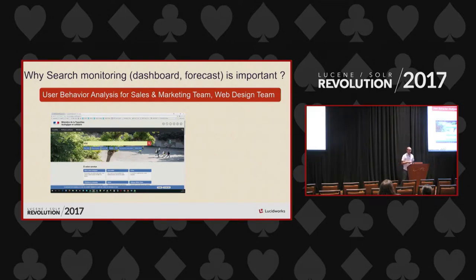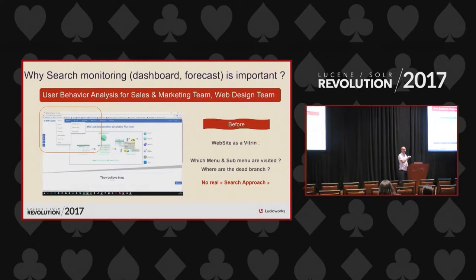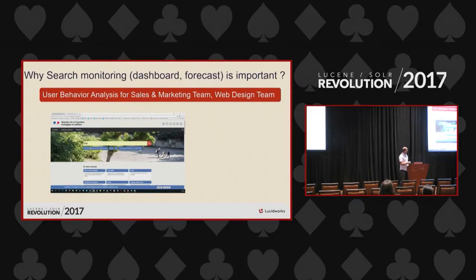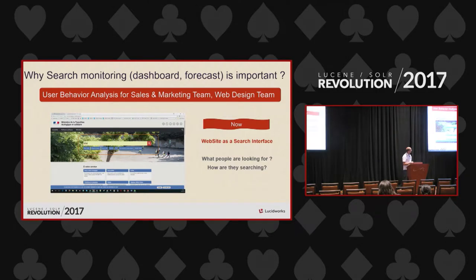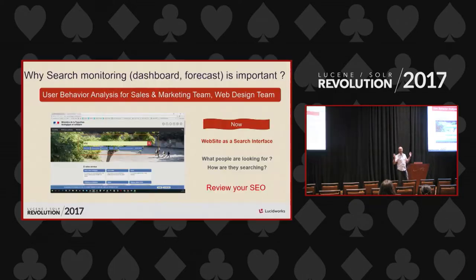People want to be guided, to have a wizard or something. Marketing teams and sales teams still want to analyze what users are doing on the website. The previous menu-based approach was easy to analyze — you could see where people go from one menu to another. Now it's very difficult: people type something and you need to guide them because when they reach the website they already know what they want.